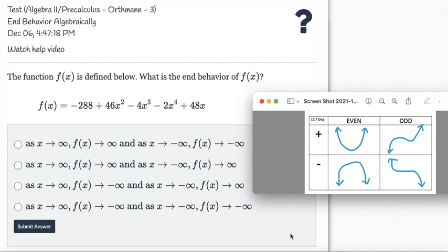So the recap of today is that we can tell the end behavior by looking at the degree and the leading coefficient. If you look at this function, it's not in standard form.